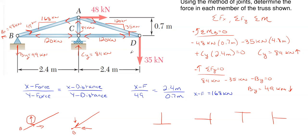This solution is technically complete, though depending on preference you could add more detail. You could fill in the hypotenuse for the diagonal members AB and AD by taking the square root of 168 squared plus 49 squared. You could also write tension or compression explicitly next to each member — pulling on a joint is tension, pushing is compression. So in summary: BC is compression, AC is compression, CD is compression, and AB and AD are tension.